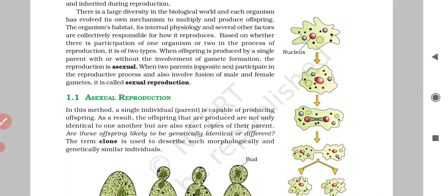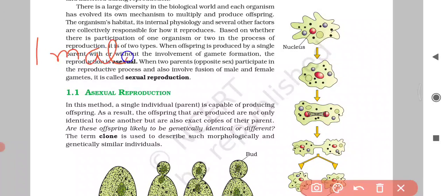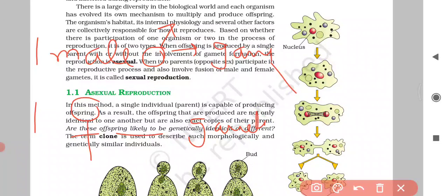participate in the reproductive process and also involve fusion of male and female gametes. There will be male and female gametes, and offspring will be produced. So this is the type of sexual reproduction.